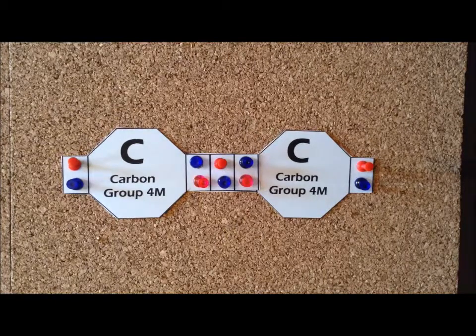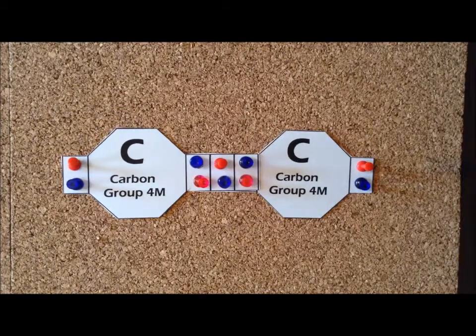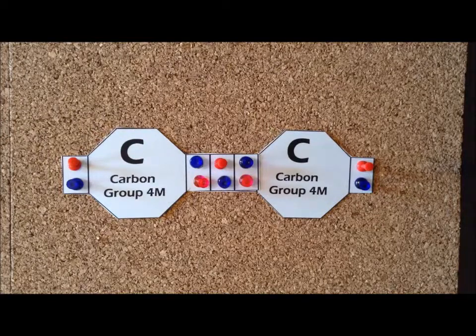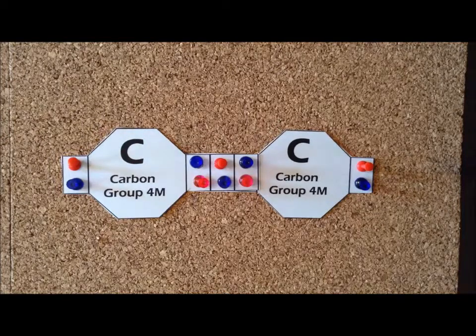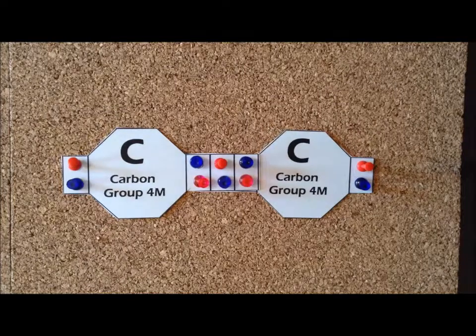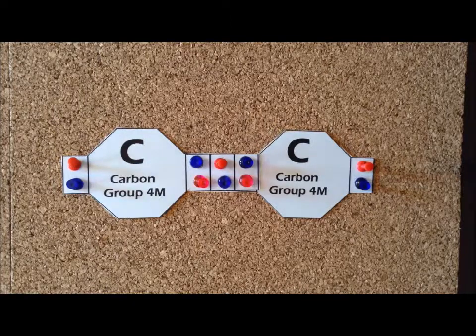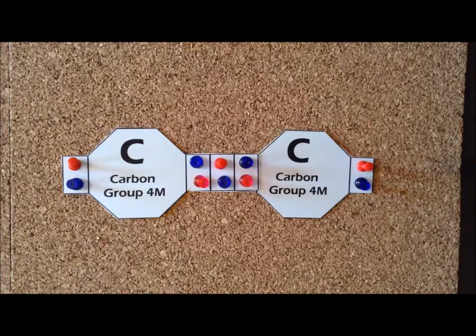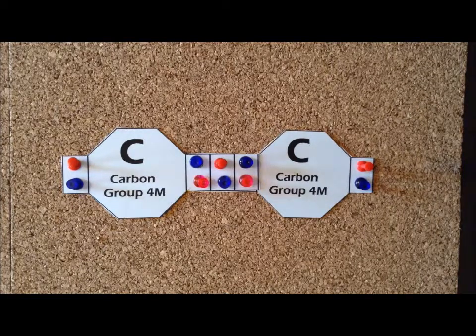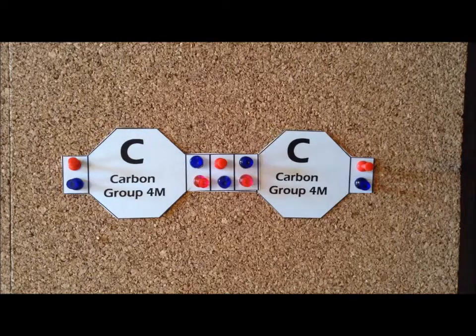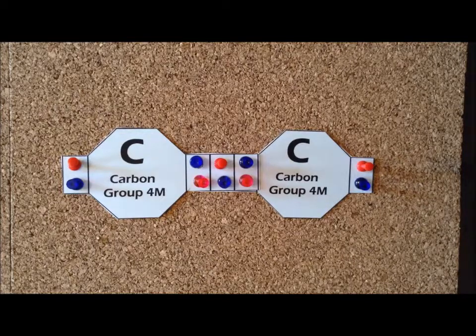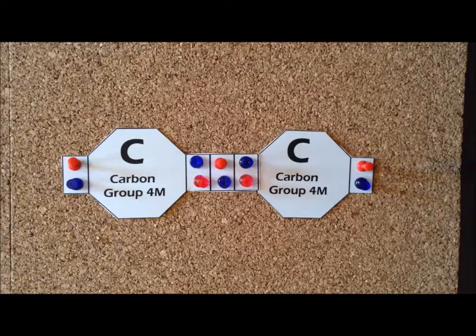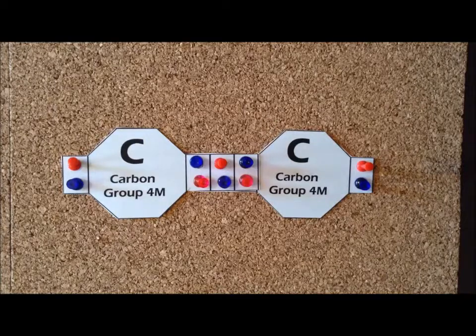One ion that is of tremendous importance in both inorganic and organic chemistry has the chemical formula C2 with a minus 2 charge. In organic chemistry, we call this the acetylide ion and in inorganic chemistry, we call it the carbide ion. Each carbon contributes four valence electrons. So that gives us a total of eight electrons just from the carbon atoms. Since it has a minus 2 charge, we need to add two more electrons. So therefore, this particular ion is a 10 electron system. And having just watched the video, you might notice that we had just seen another 10 electron system, nitrogen, N2.